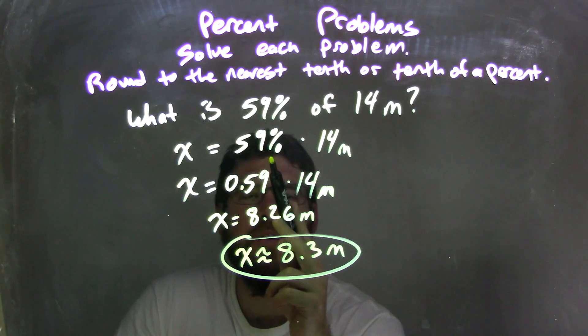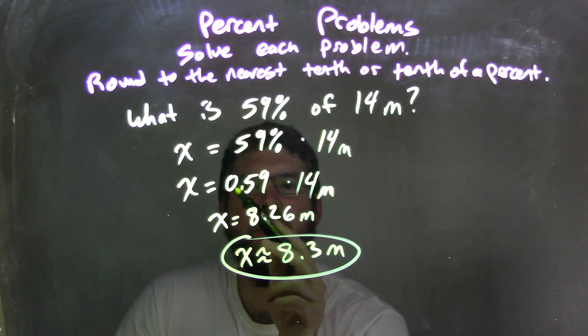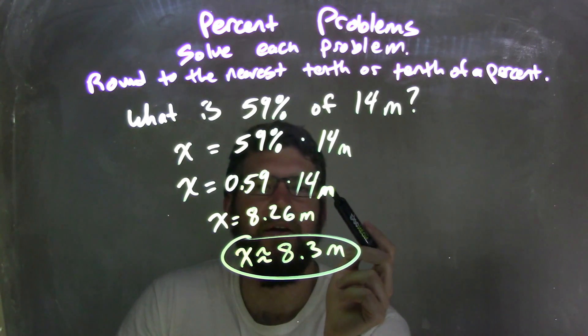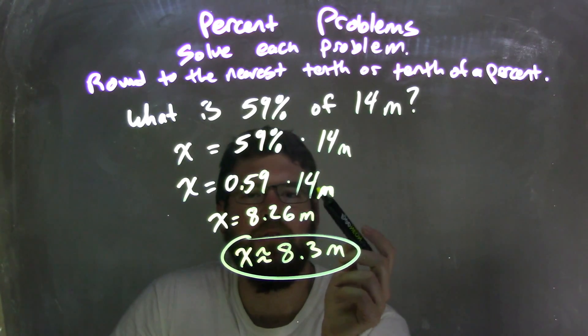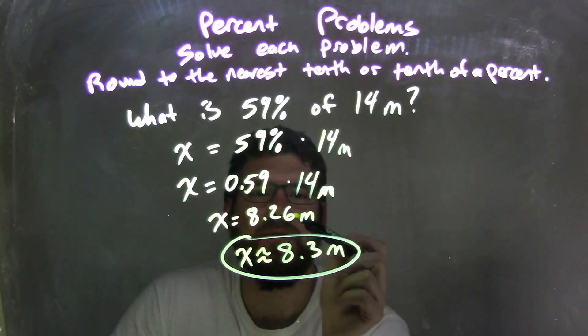I then converted the 59% to a decimal, giving me 0.59 times 14 meters. I multiplied that out. So 0.59 times 14, with my calculator, gave me 8.26 meters.